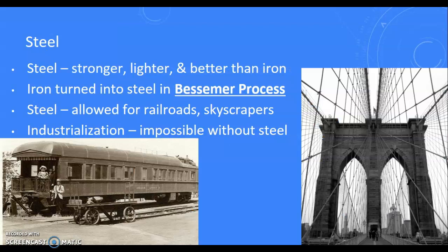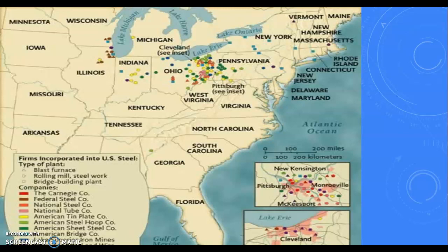With steel, this is going to be important because it's going to be stronger, lighter, and even better than iron. You're going to see the rise of the Bessemer process, which was important because it turned iron into steel. It's going to be useful for constructing buildings and bridges, and even railroads and skyscrapers. You could really make the argument that the Industrial Revolution would not have been possible without steel, because you need to build all these things for transportation and factories.